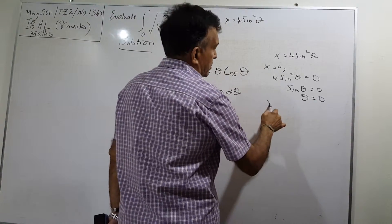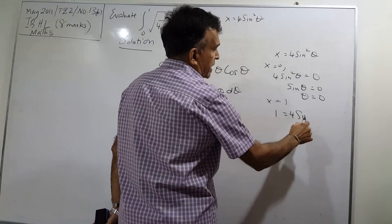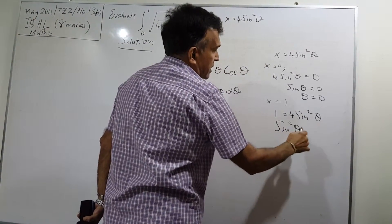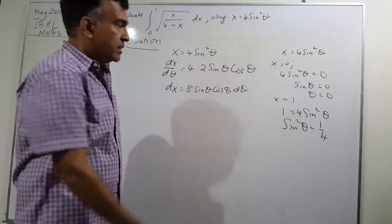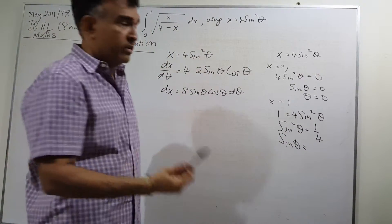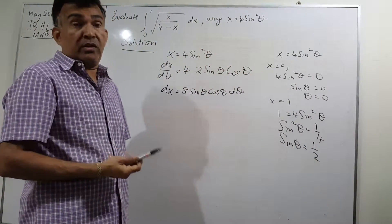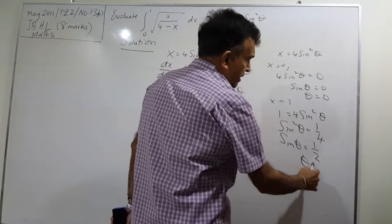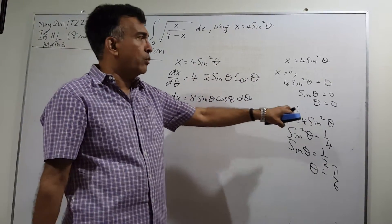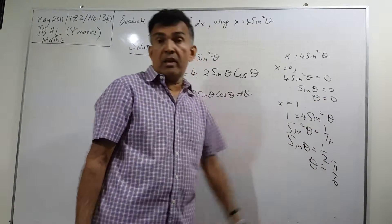For the upper limit, x equals 1, so 1 equals 4 sine squared theta, giving sine squared theta equals 1/4, and therefore sine theta equals plus or minus 1/2. Taking the first quadrant, sine theta equals 1/2, so theta equals pi over 6. My new limits are 0 and pi over 6.